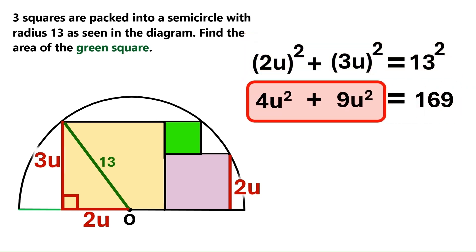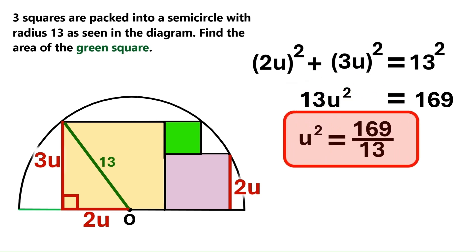And these two add up to 13u squared. And we do the math to find out that u equals radical 13.